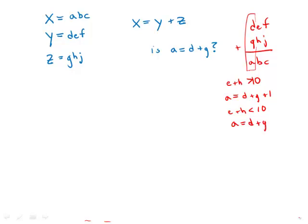So this depends very much on what's happening in the tens column. Statement 1 tells us the tens digit of x equals the tens digit of y plus the tens digit of z — that is, b equals e plus h. This means there is no carrying. We have two small numbers that add up to a single digit number, since b is a single digit. So e plus h adds up to a single digit number, and nothing is therefore carried into the hundreds place, which means a equals the sum of d and g. This statement allows us to give a definitive yes answer to the question. Statement 1 is sufficient.